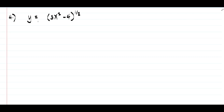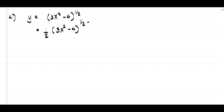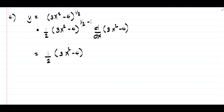On example number four, we have y equals quantity 3x squared minus 4 raised to 1 half. To find the derivative, bring down 1 half, write 3x squared minus 4 raised to 1 half minus 1, that is negative 1 half, then multiply by the derivative of 3x squared minus 4. The derivative of 3x squared is 6x and the derivative of negative 4 is 0.